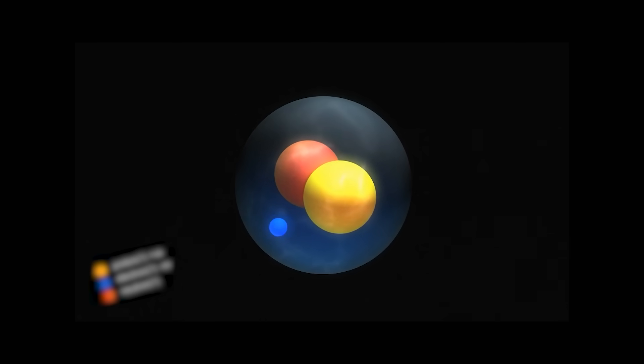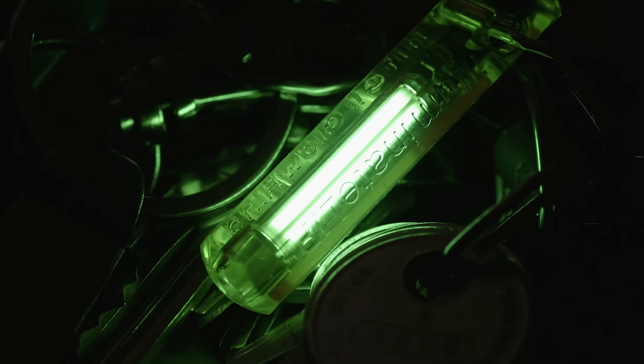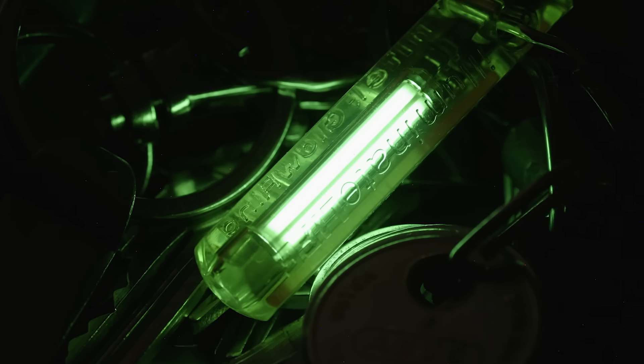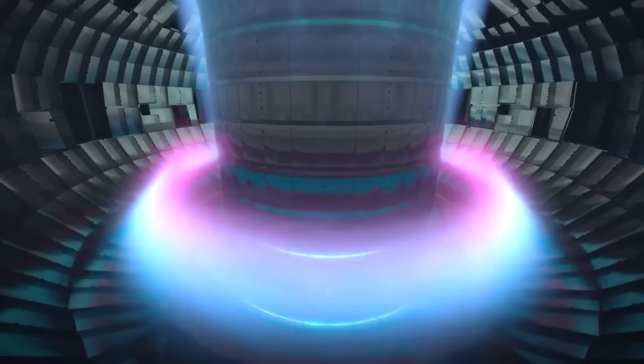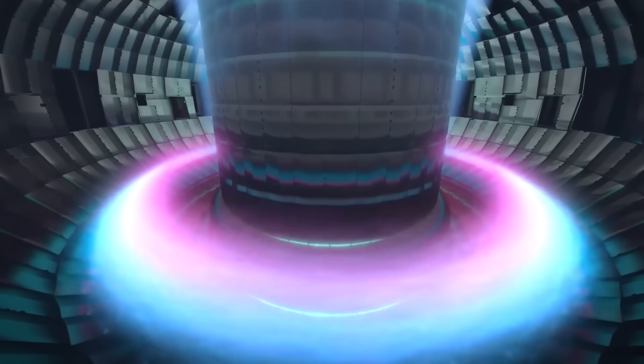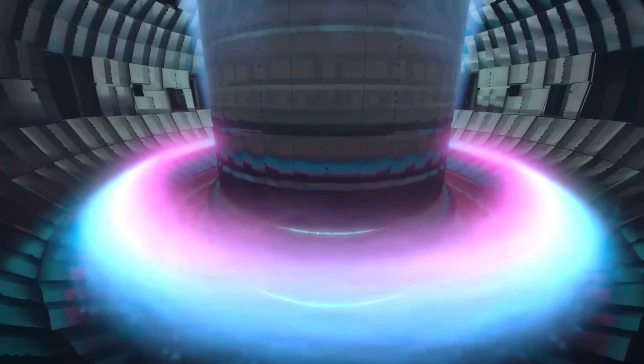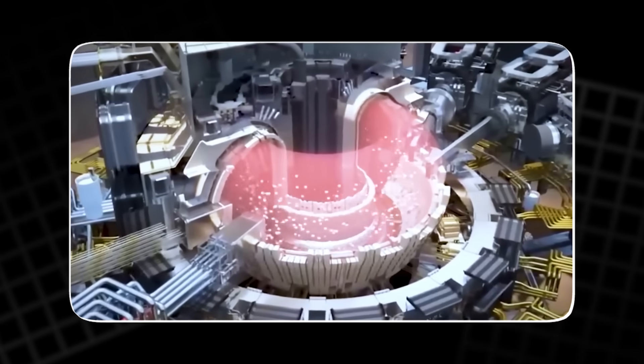On Earth, the most common plan is to fuse deuterium and tritium, two forms of hydrogen. Deuterium is in seawater. Tritium is rare, but a reactor can make its own by using lithium in a surrounding blanket. The catch is temperature. To get nuclei close enough, the fuel must be heated to around 100 million degrees Celsius. At that heat, atoms break into plasma, a charged gas that acts like smoke with a mind of its own.